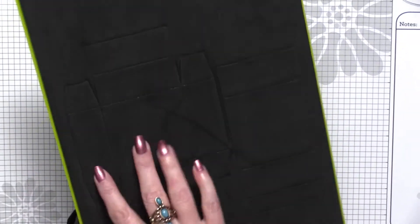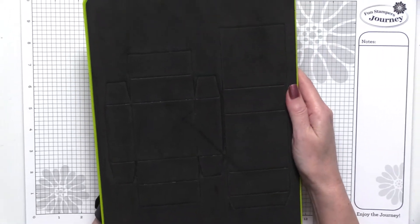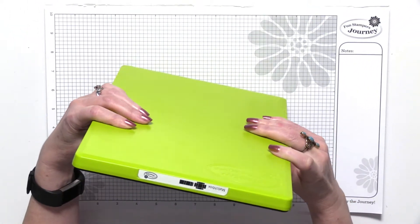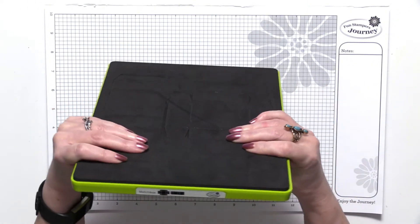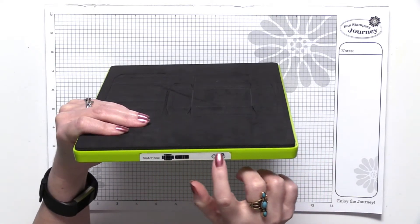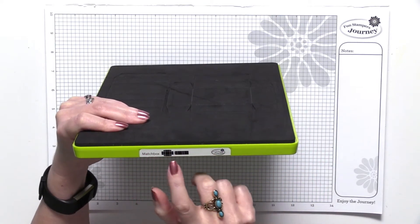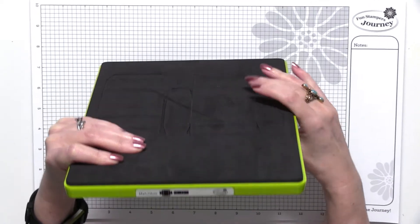Our matchbox die looks like this. It is one of our steel rule dies, and each of our steel rule dies has a label at the top which has the name and shows the pieces that are going to be die cut out.